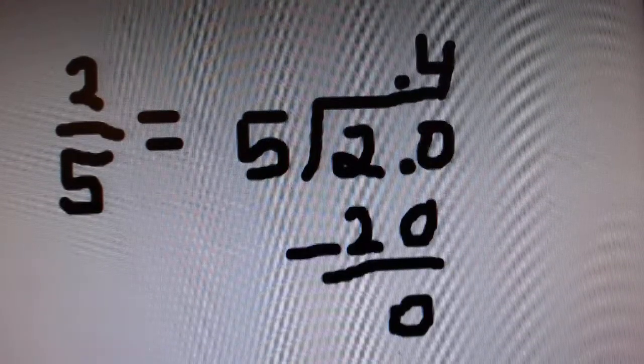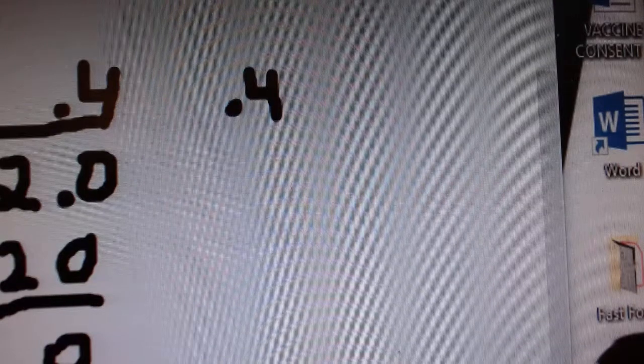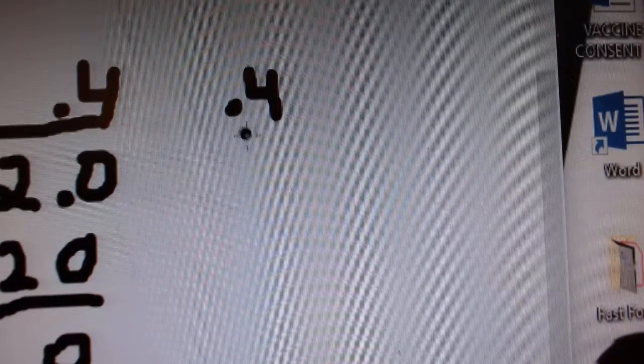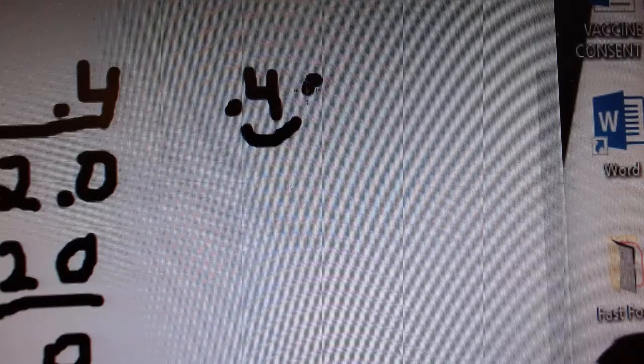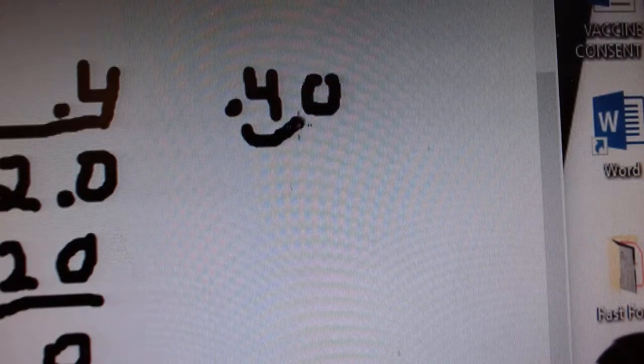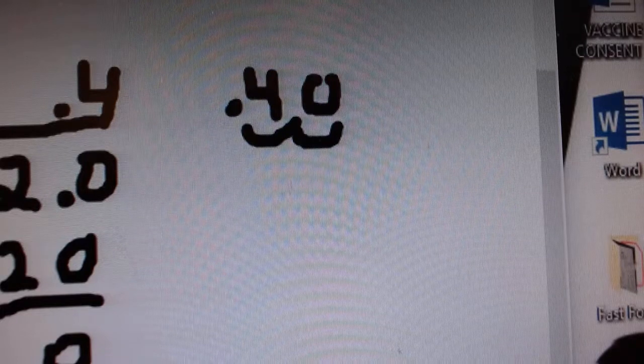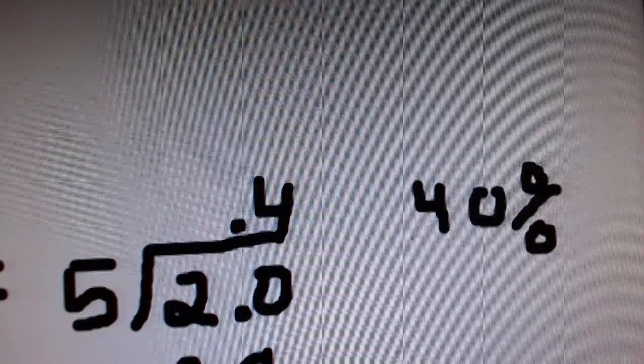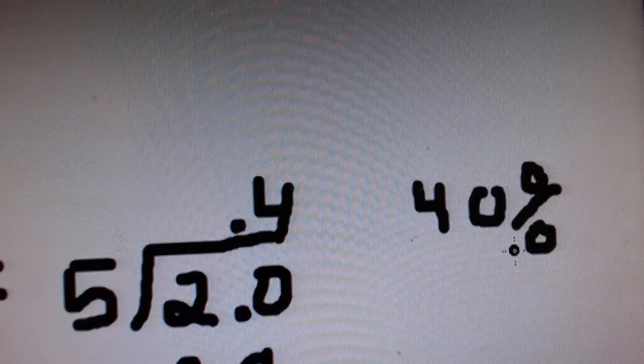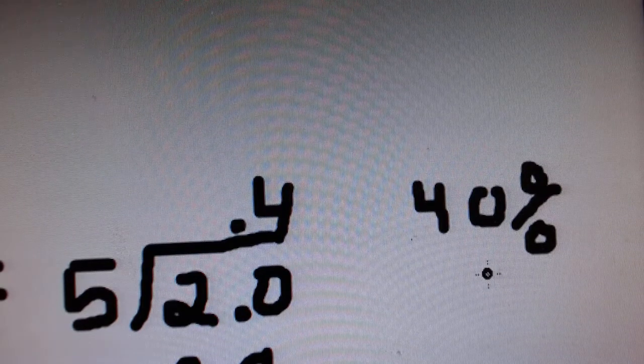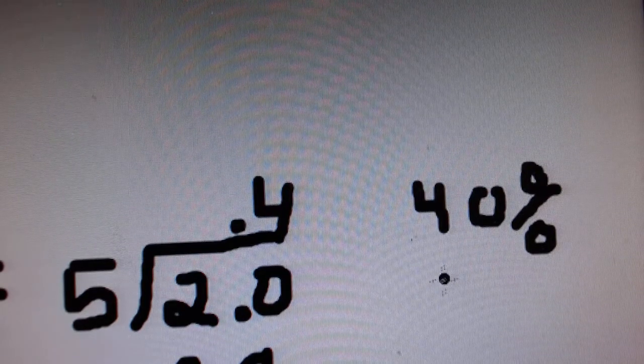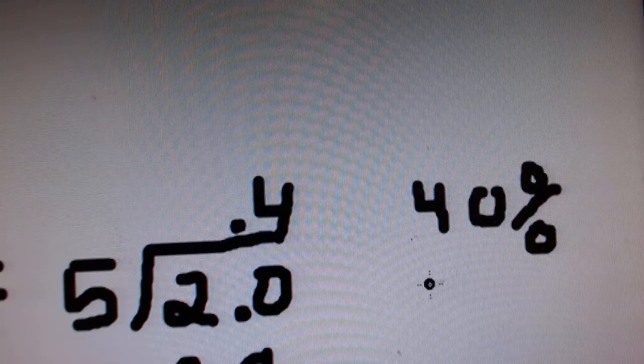That leaves me with 0.4. Next, turn 0.4 into a percentage by moving the decimal two places to the right. So we go one place and insert a zero, then go one more time and insert the percentage sign. So this company spends 40% of its revenues on employees, or payroll. Our answer would be 40%.